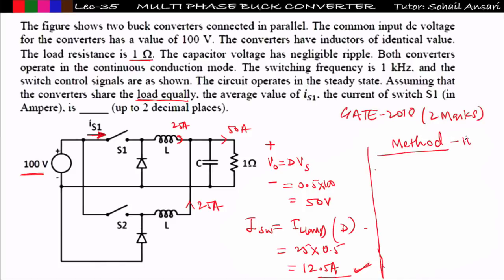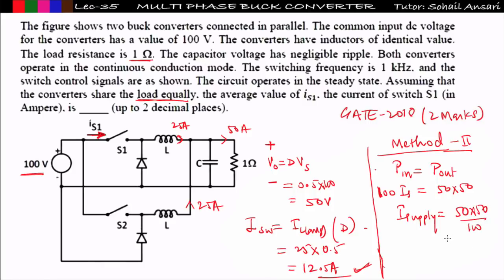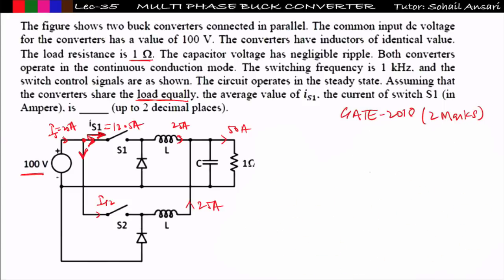Method 2: In any power electronics converter, input power equals output power. Output power = V0 × i0 = 50 × 50 = 2500 W. Input power = Vs × iS, so supply current iS = 2500 / 100 = 25 A. Applying KCL, this supply current divides equally between the two canonical switches of the same rating. So iS1 = 25 / 2 = 12.5 A — the same answer by a different method.